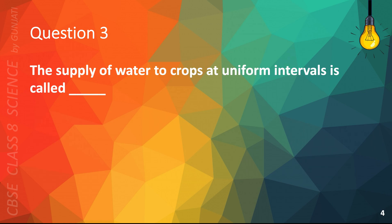Question 3. The supply of water to crops at uniform intervals is called A. Watering, B. Drying, C. Irrigation, or D. Fertilizing.